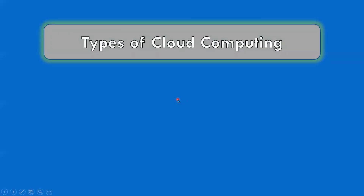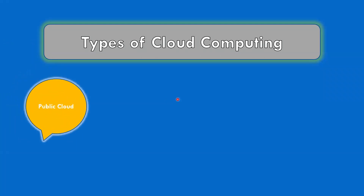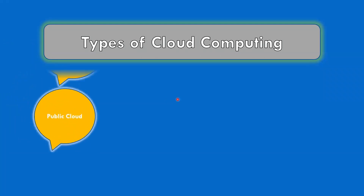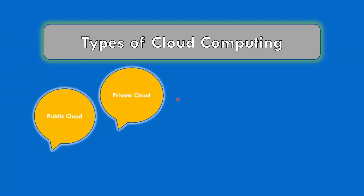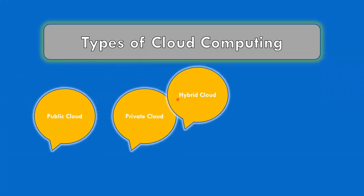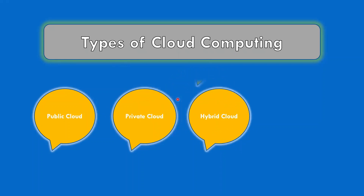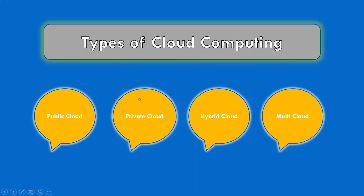Going to the types of cloud computing, we have public cloud, private cloud, hybrid cloud, and multi-cloud. These are the four types of cloud computing models which are available currently in the market.